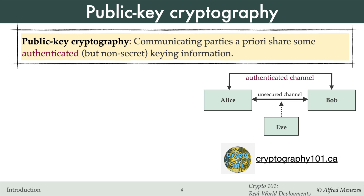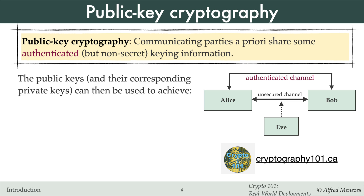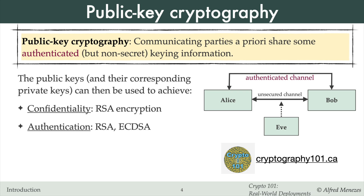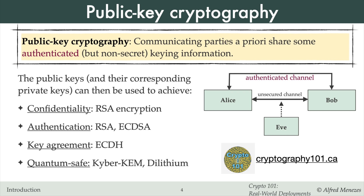In public key cryptography, Alice and Bob share keying material that has been authenticated but is not secret. They exchange their public keys over an authenticated channel, and later use these public keys and their corresponding private keys to engage in secure communications over an unsecured channel, perhaps by using RSA encryption for confidentiality, RSA or ECDSA signatures for authentication, Elliptic-Curve Diffie-Hellman for key agreement, Kyber for quantum-safe key establishment, or Dilithium signatures for quantum-safe authentication.